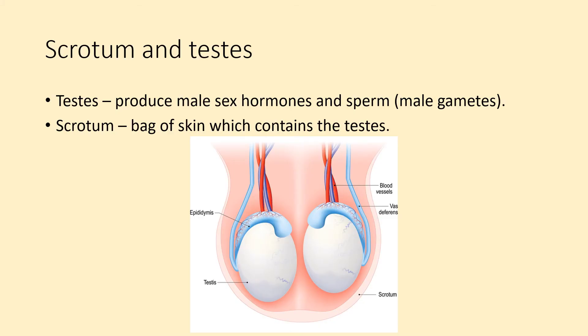Scrotum and testes. The testes produce male sex hormones and sperm, which are the male gametes. The scrotum is the bag of skin which contains the testes. It's quite important that the testes sit inside the scrotum because sperm can't tolerate body temperature — they need to be a little bit cooler. That's why the scrotum allows the testes to hang outside the body.